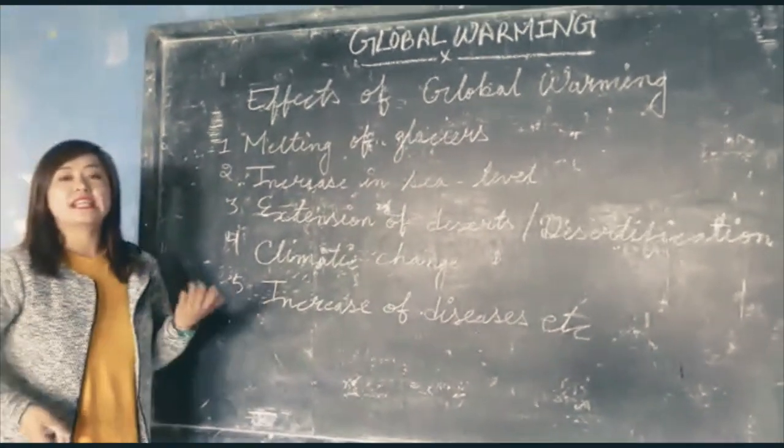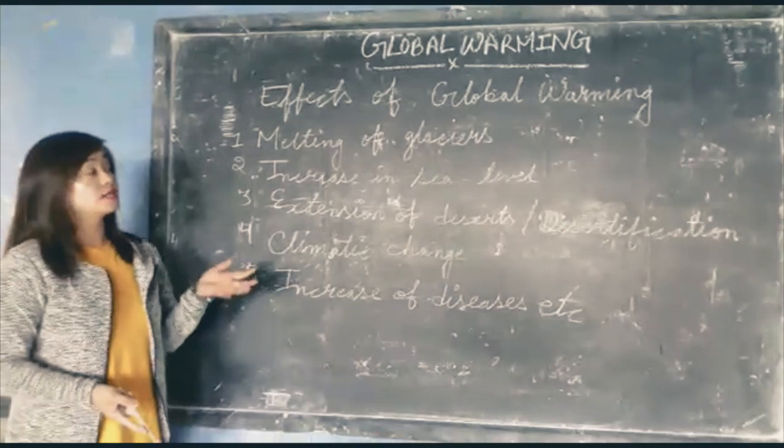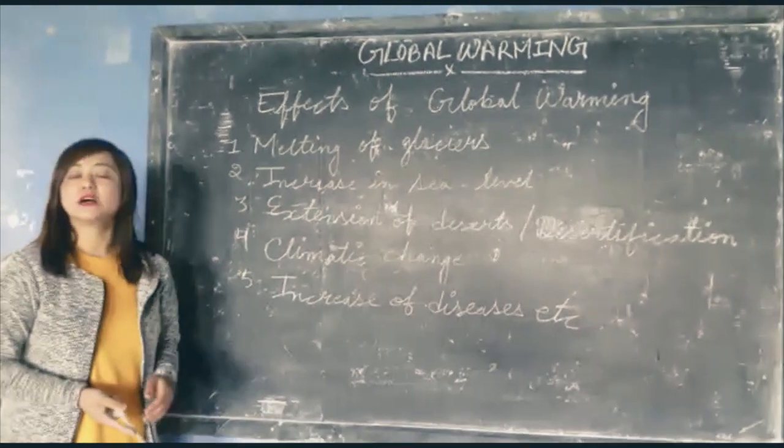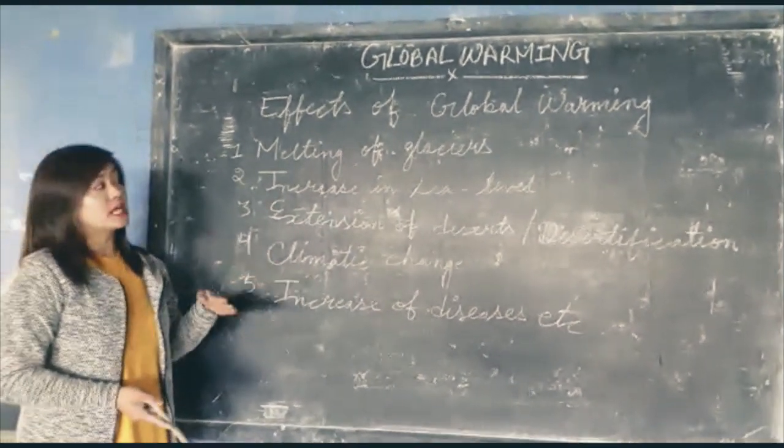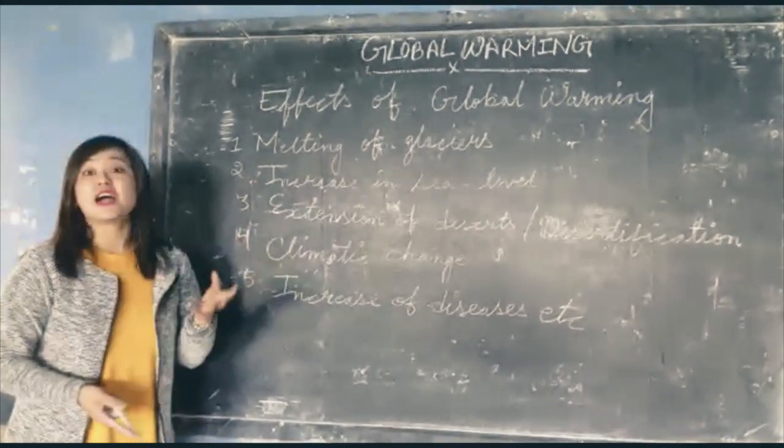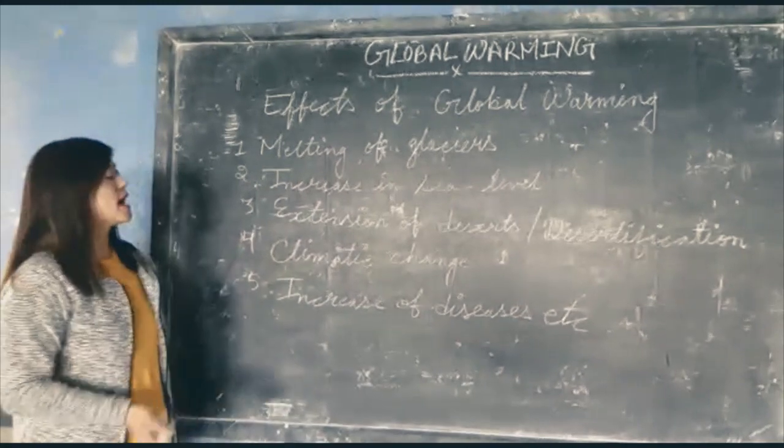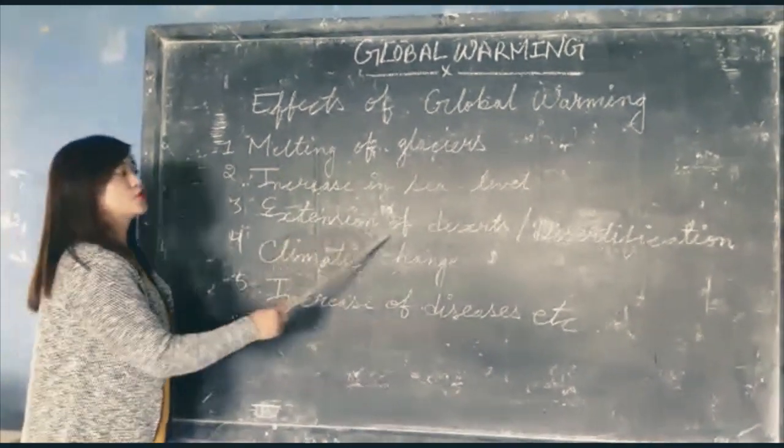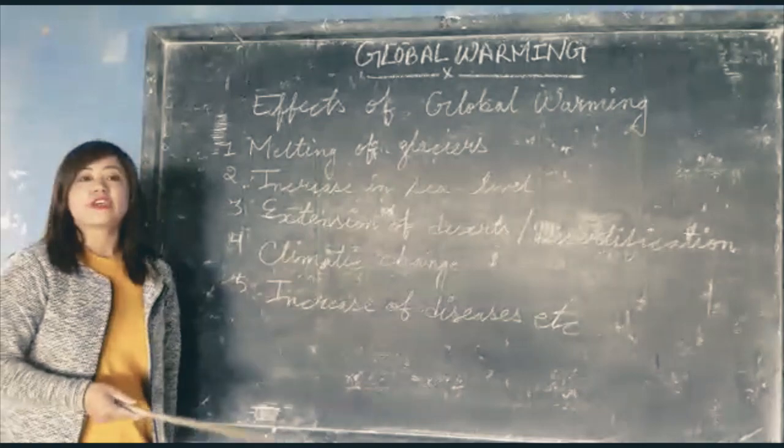Because of global warming, glaciers are melting. As glaciers melt, there is a rise in sea level. As a result of rising sea levels, some coastal areas and islands are getting submerged. Another effect of global warming is the extension of deserts or desertification.